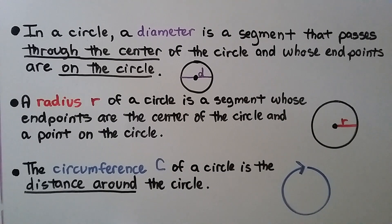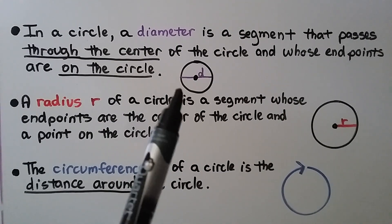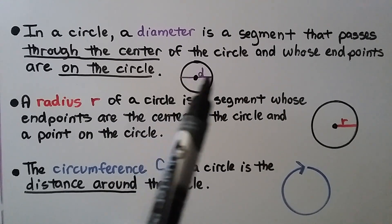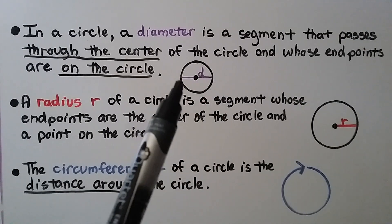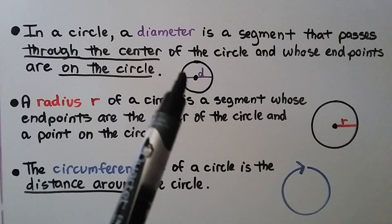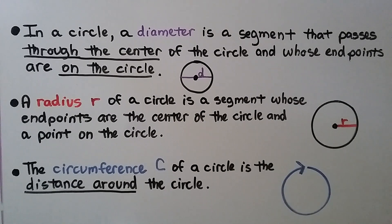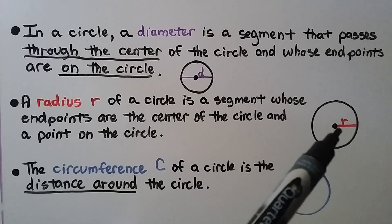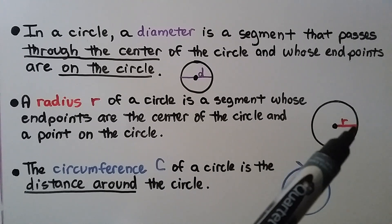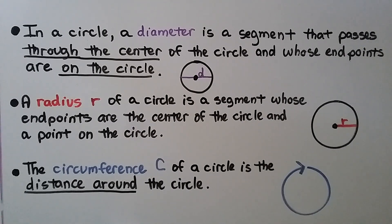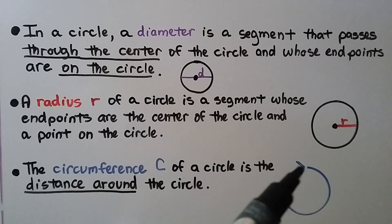In a circle, a diameter is the segment that passes through the center point of the circle and whose endpoints are on the circle. A radius, r, is a segment whose endpoints are the center point and a point on the circle. The circumference, c, of a circle is the distance around the circle.